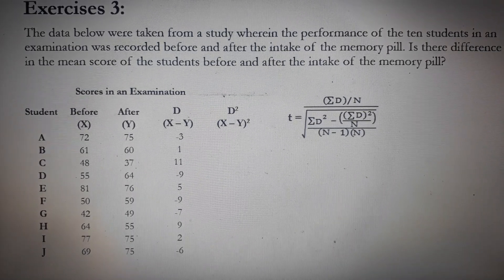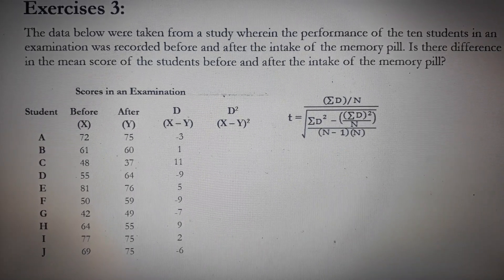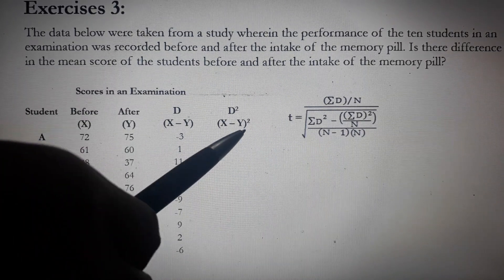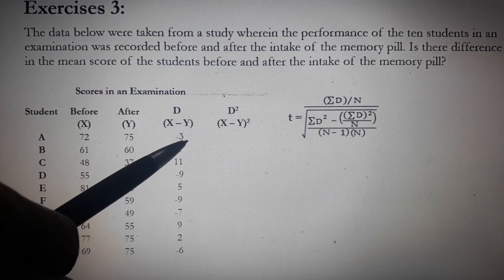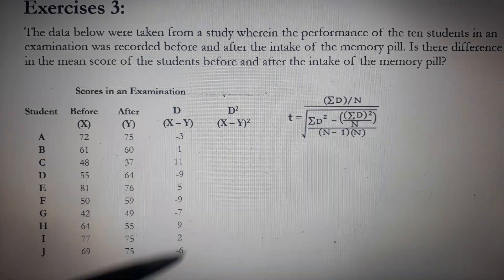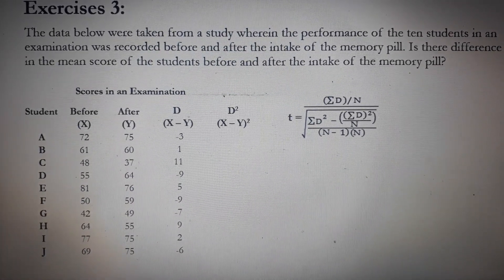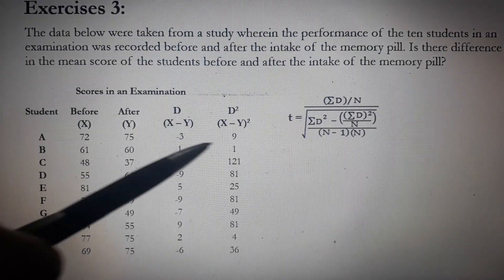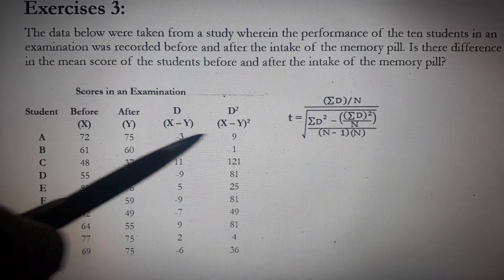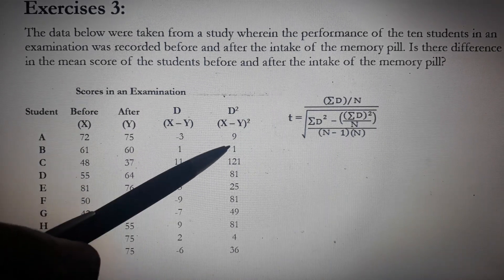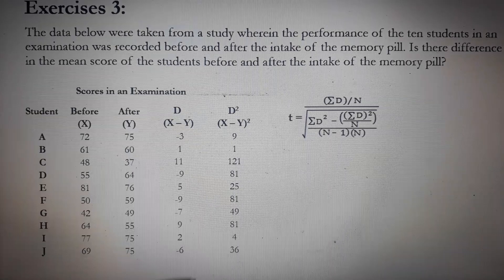Now, the last column is labeled as D squared. It's simply X minus Y squared. In other words, we will just be squaring the values on the column D. Our numbers here are, the first entry is 9, which is actually the square of negative 3. Negative 3 times negative 3 is 9, and so on.